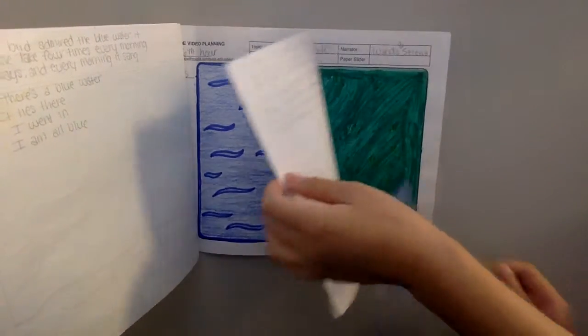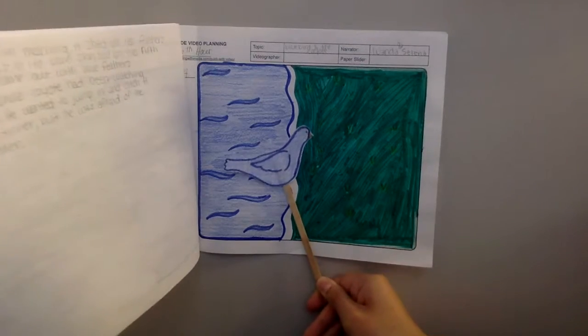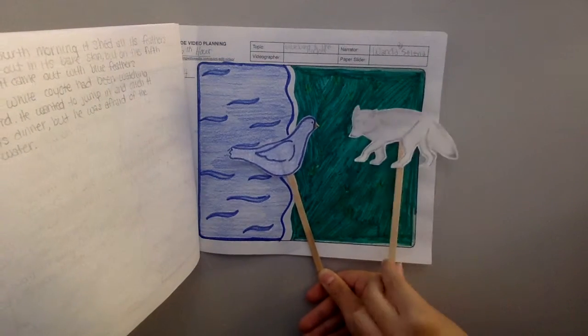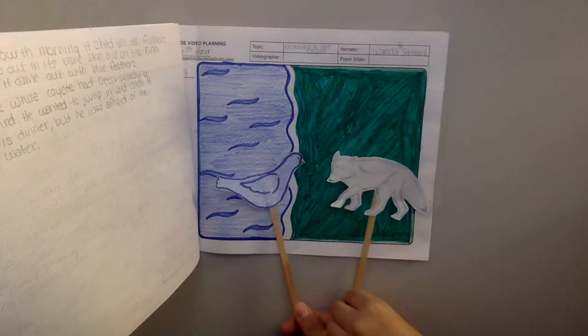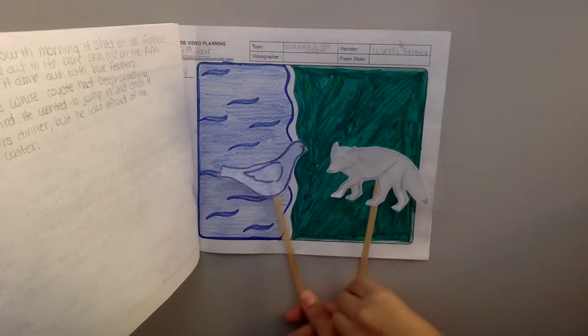But on the fifth morning, he said to the bluebird, How is it that all your ugly colors have came out of your feathers, and now you are all blue and springy and beautiful?